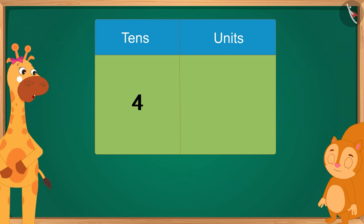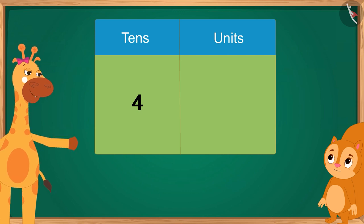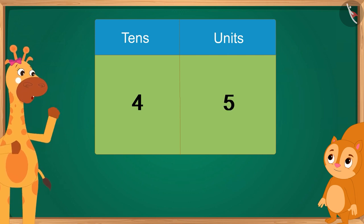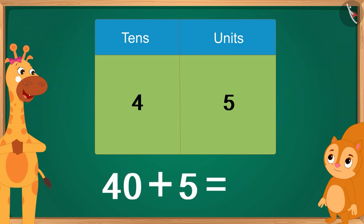And now, we have 5 flowers separately. So, we will write 5 here in the units place. 4 tens and 5 units become the number 45.